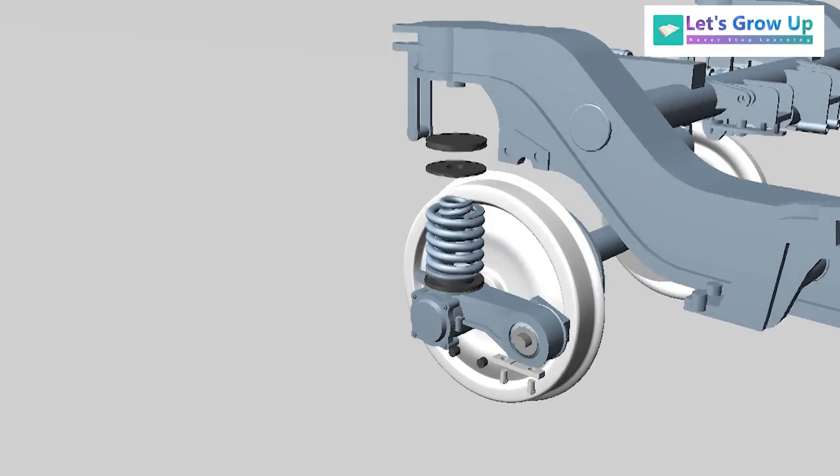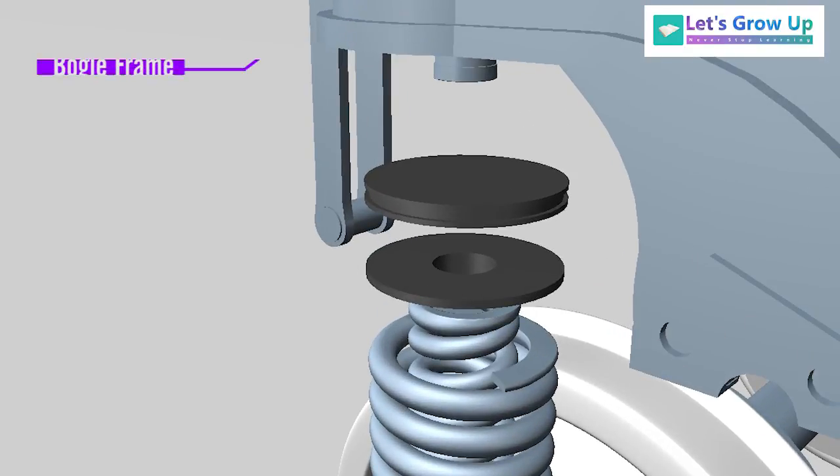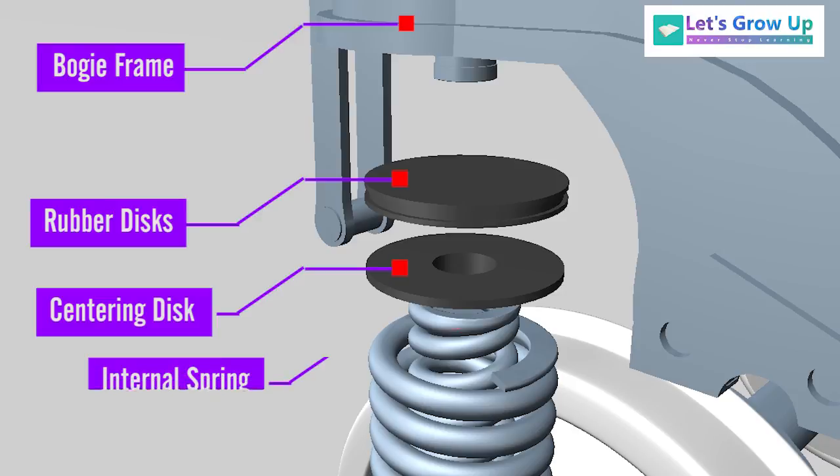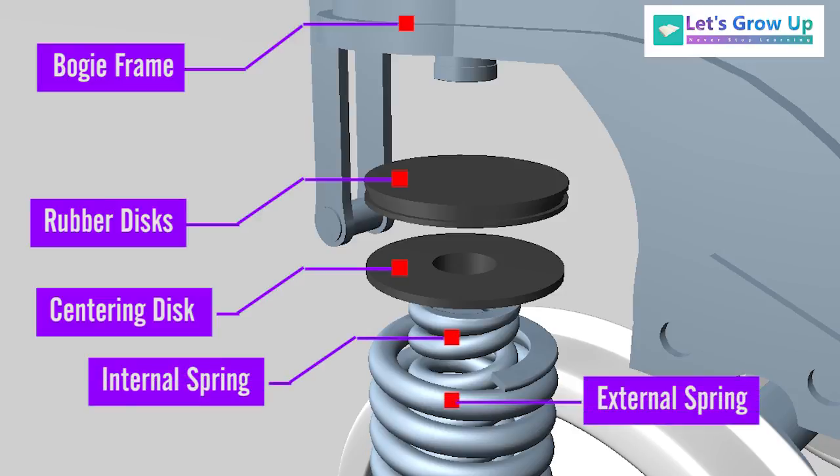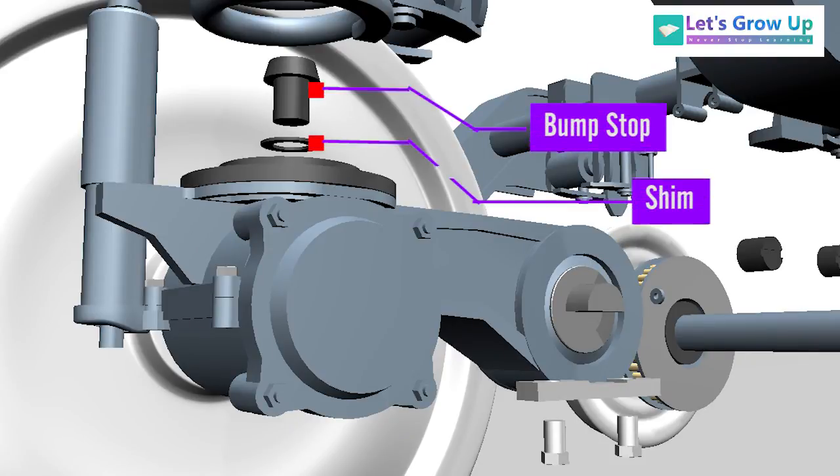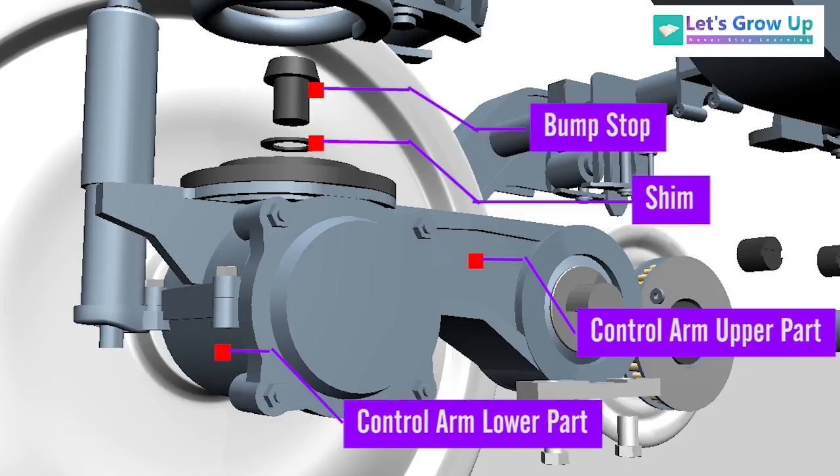is known as primary suspension: bogey frame, rubber discs, centering disc, internal spring, external spring, bump stop, shim, control arm upper part, control arm lower part,